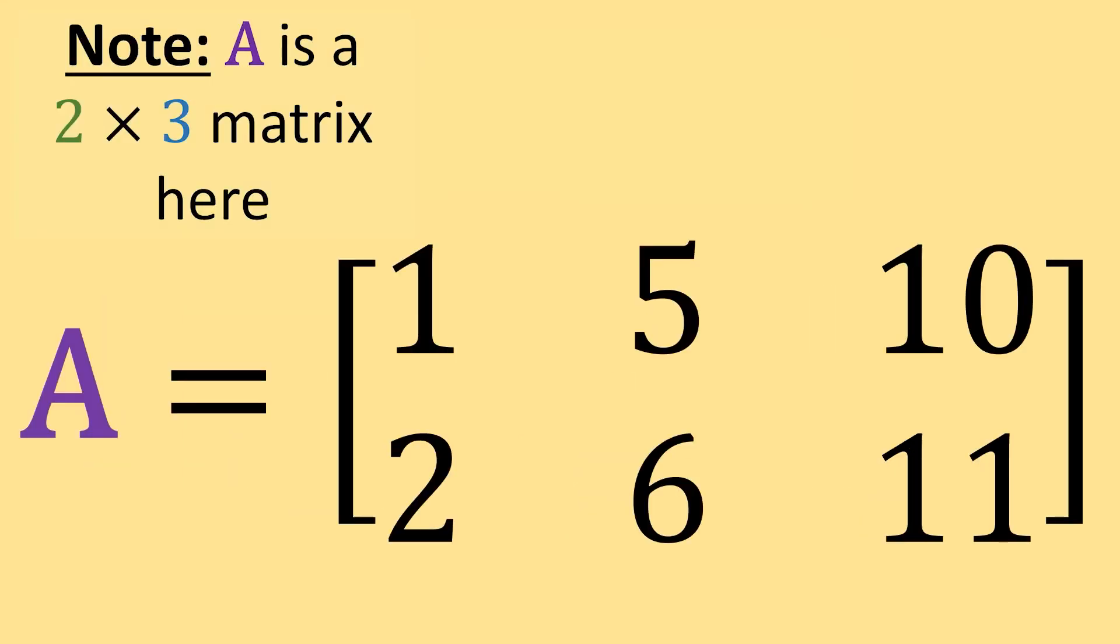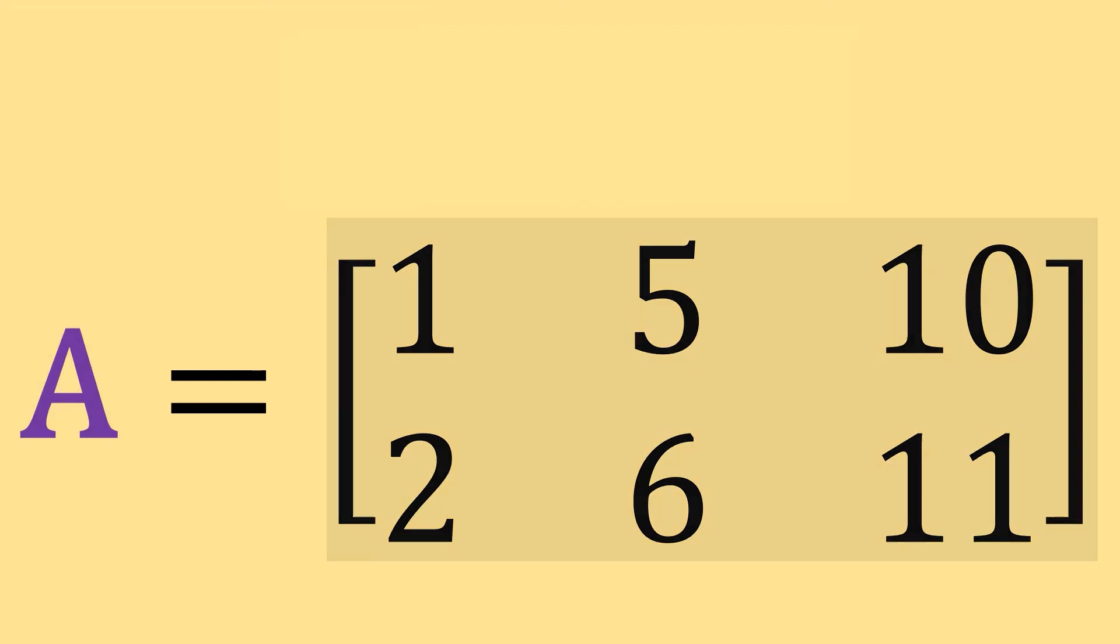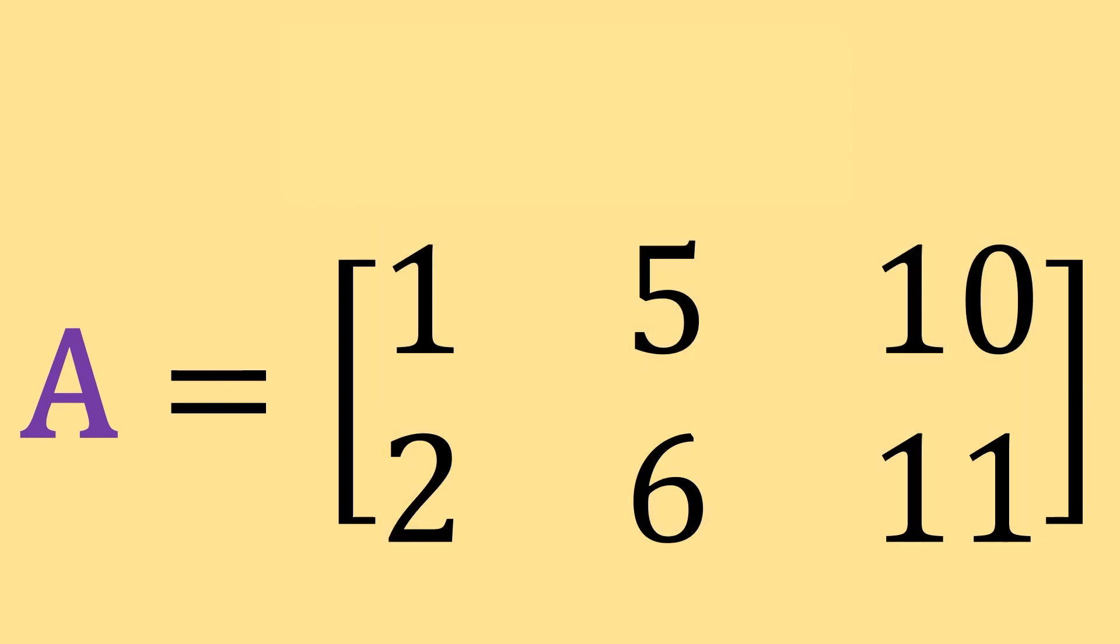So say I had matrix A and it's equal to this matrix here, where my first row is 1, 5, 10, and my second row is 2, 6, 11. If I was told to find the number that's in position A 1, 2, that's just going to be the number that's in row 1, column 2, which it looks like is 5.